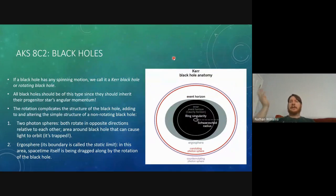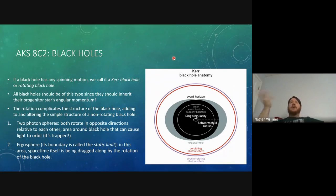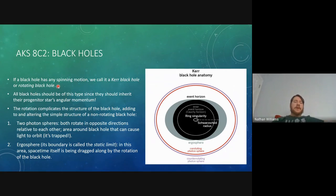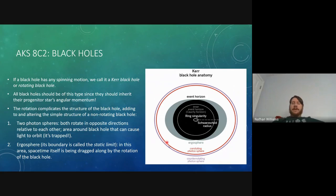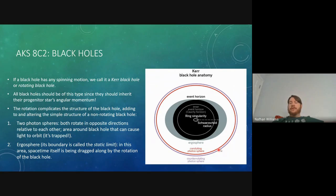Since black holes are unlikely to remain non-rotating due to conservation of angular momentum, we also have a model for rotating black holes. These are called Kerr black holes, named after the astrophysicist Kerr. The rotation unfortunately complicates the structure significantly — many more parts and a lot more weirdness. For instance, instead of a single photon sphere, a Kerr black hole ends up with two photon spheres.